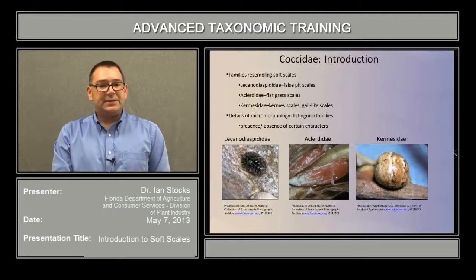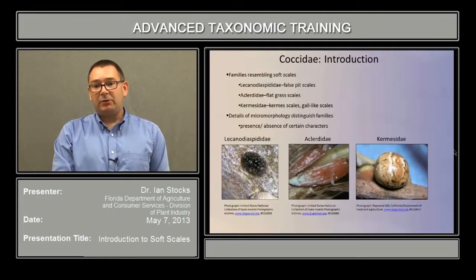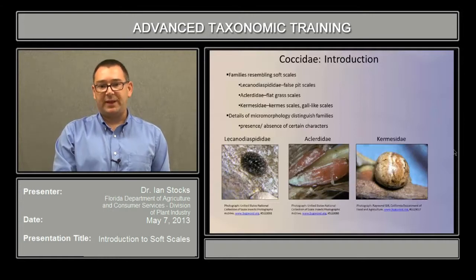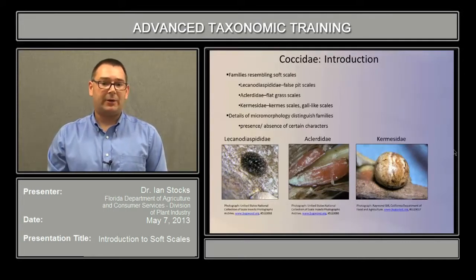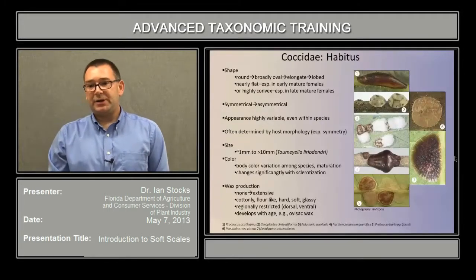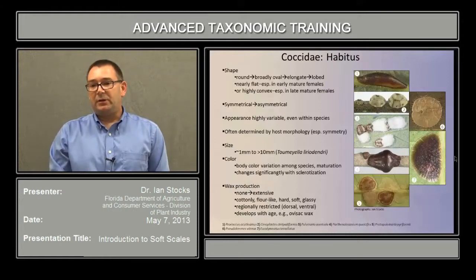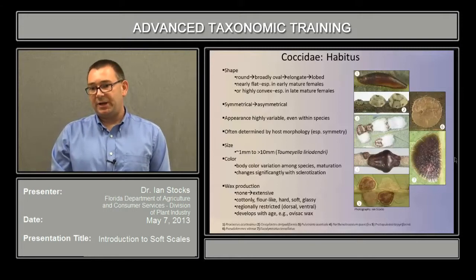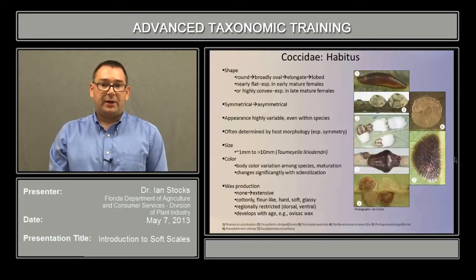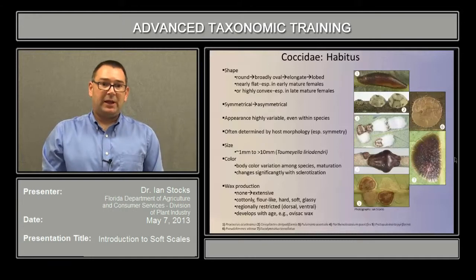It's in details of the micromorphology in particular that distinguish the families, such as the presence or absence of certain characters. The illustrations in the plate on the right-hand side give you a little bit of a glimpse into what a tremendous amount of diversity there is in morphology, size, shape, and color found at the family level.